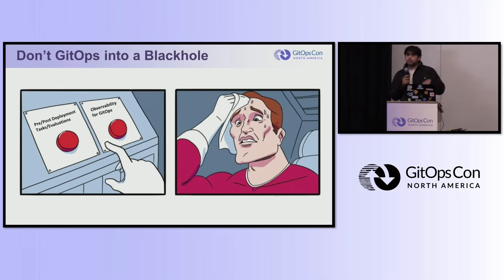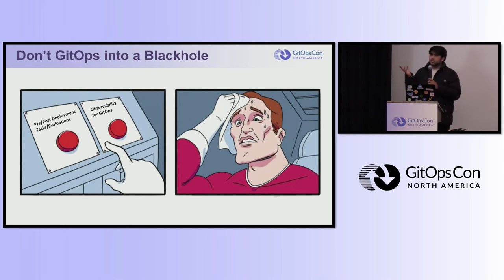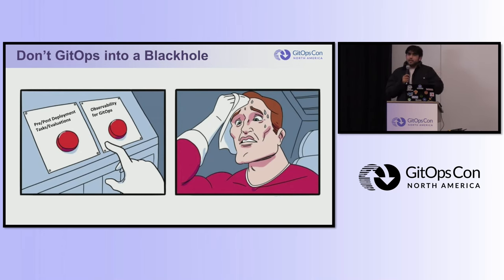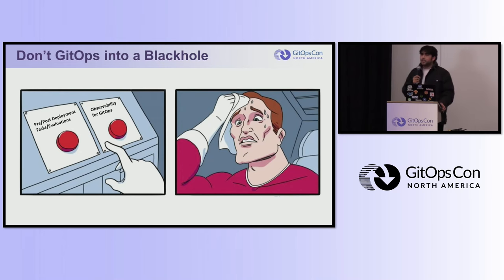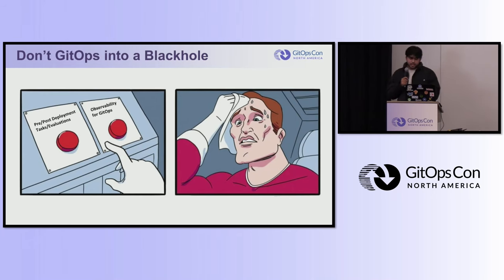Many times developers make decisions based on metrics. These metrics come from different metric providers — Prometheus, Dynatrace, Datadog. Your organization might be using different metrics from different providers, so it gets difficult to maintain all these integrations.